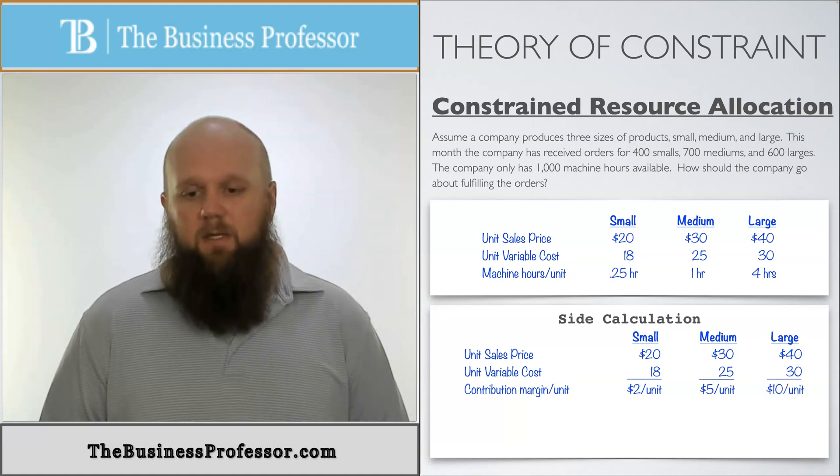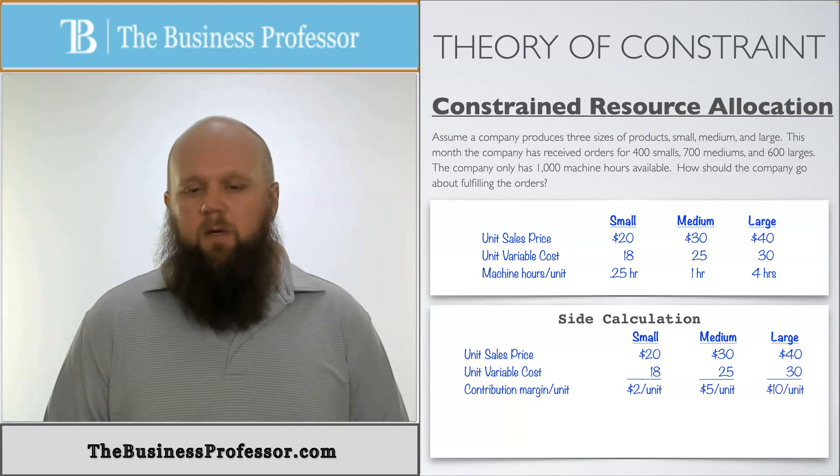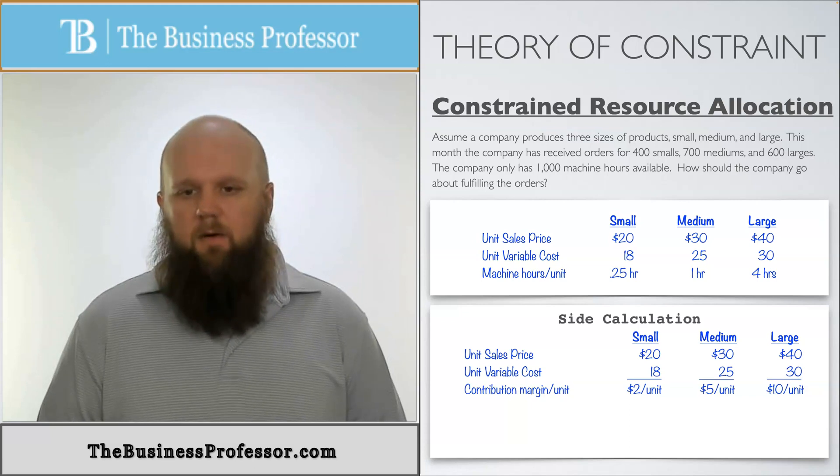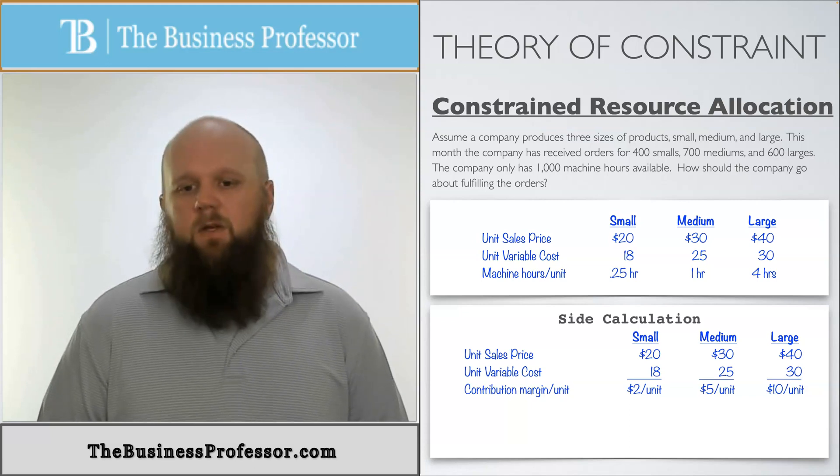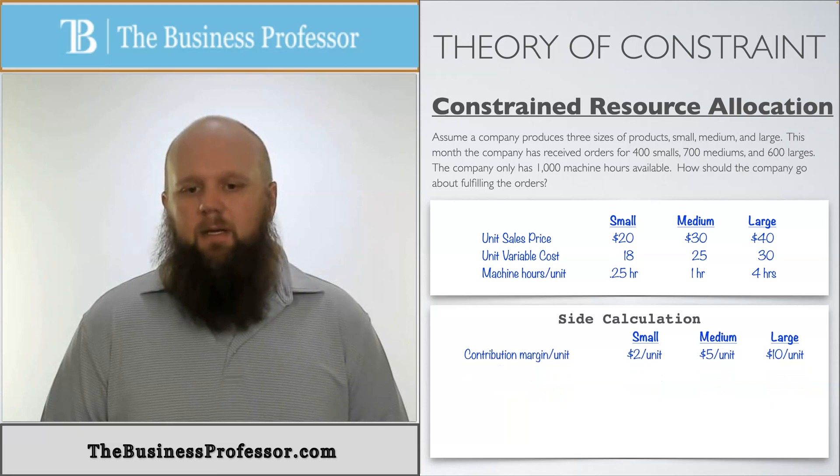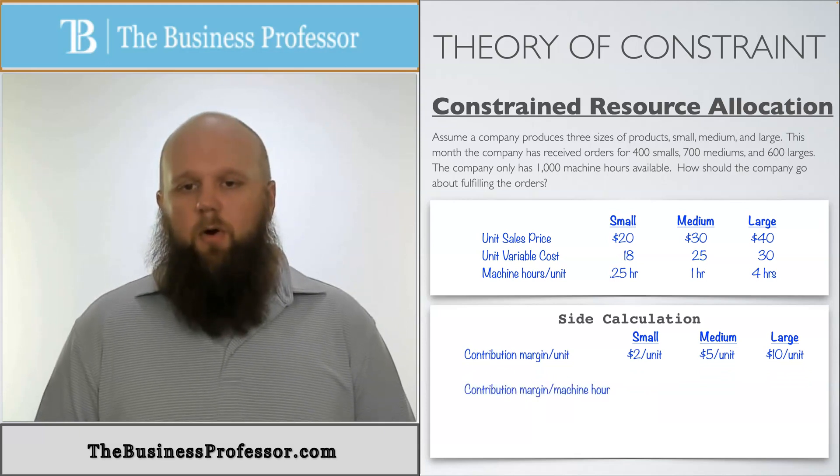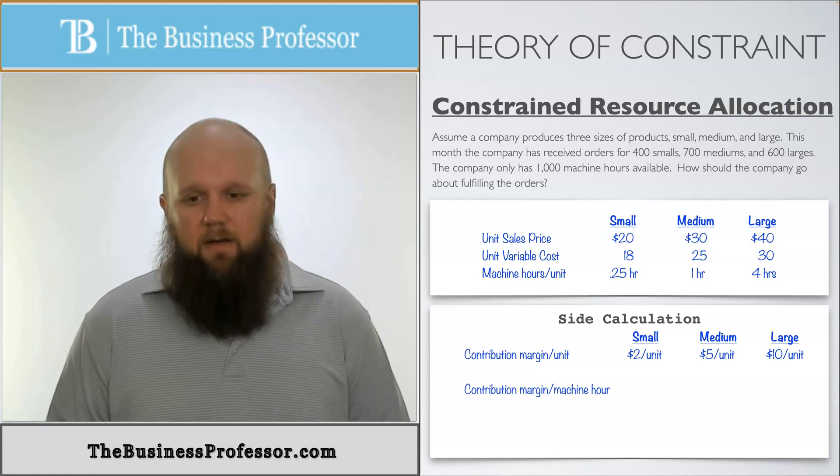Again, if we're using this, then we would do it in the order of large, medium, and small. However, we want to put this into terms of the constrained resource. So now let's take that and try to see if we can calculate the contribution margin per machine hour. We only have 1,000 of them.